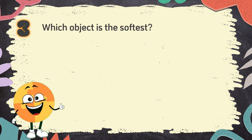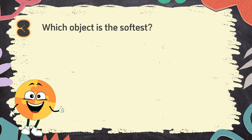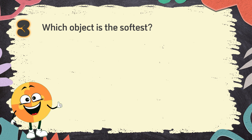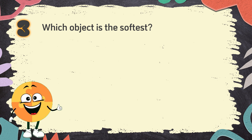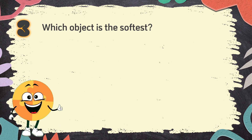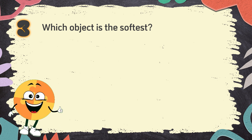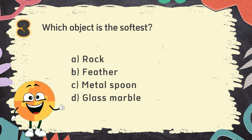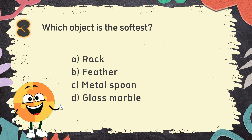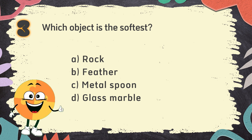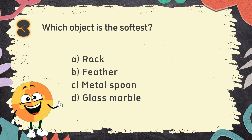Number 3. Which object is the softest? The choices are: A. Rock, B. Feather, C. Metal Spoon, D. Glass Marble.